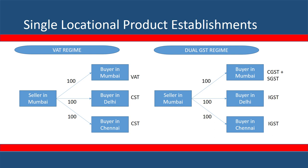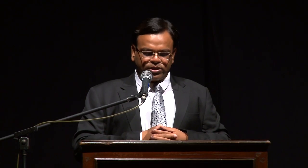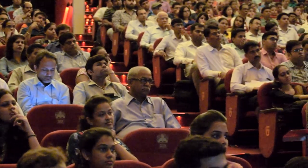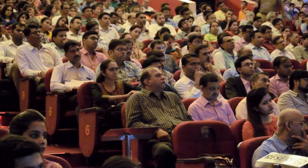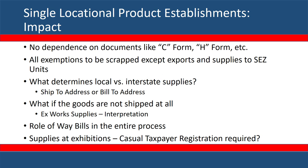Starting with the simplest model — a single locational product establishment with a factory or warehouse in one state. Today you sell against VAT for same-state customers and CST for different-state customers. Under GST, life remains essentially the same: one registration, billing CGST+SGST for intra-state customers and IGST for inter-state customers. There's much less dependence on documents like C-form and F-form.